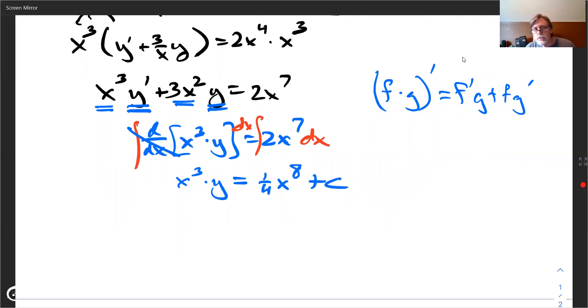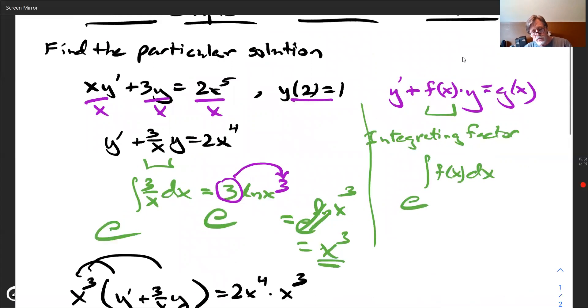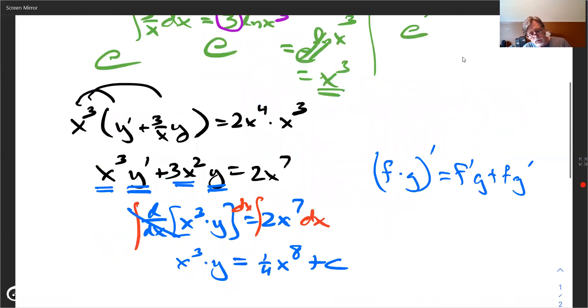So we could be done by just dividing through by x cubed. Some people do it right away. I just go, before I do that though, what I do is I look for, okay, this initial condition y of two is equal to one.